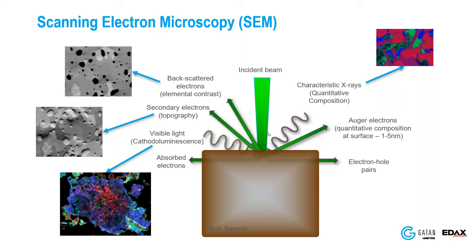The X-rays produce an EDS signal — energy dispersive spectroscopy — and that gives you quantitative chemical composition of the material. The backscatter electrons give you information about elemental contrast. The secondary detector, which is often the primary detector in an SEM, gives you information on topography. You can put a cathodoluminescence detector in and get visible light, and there are other detectors you can put in the microscope as well.